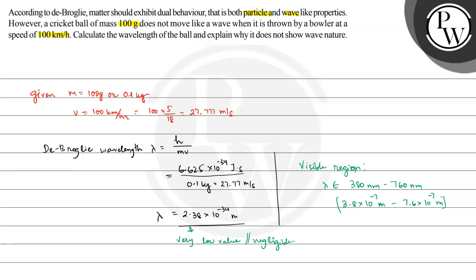So because this wavelength value is very small, that is why it does not show wave nature, because this wavelength is very negligible and this is close to zero.